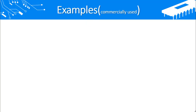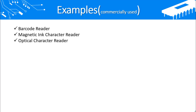Last lesson we learned about input devices — specifically barcode reader and magnetic ink character reader. Today we will learn the next three input devices: optical character reader, optical mark reader, and card reader. These are all commercially used input devices, meaning they are not used in our homes.